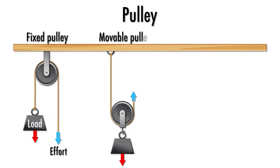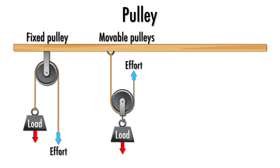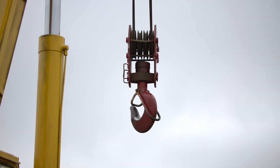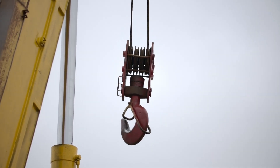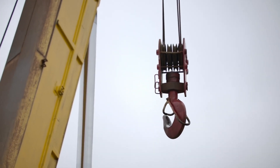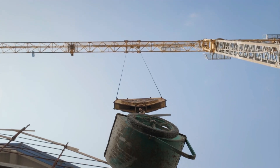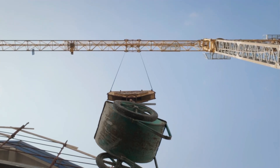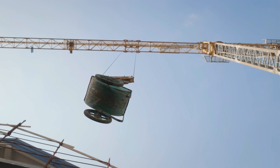Unlike fixed pulleys, in a moveable pulley, the wheel moves with the load and the effort and movement of the load are in the same direction. This reduces the required effort, but increases the distance over which it's applied. An example of a moveable pulley can be found in a construction crane, where the pulley moves with the weight of the building materials, allowing for a heavy load to be lifted with less effort.